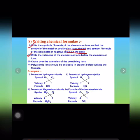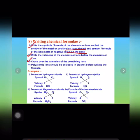The second rule is to write the valences of the elements or ions below the elements or ions. The third rule is to cross over the valences of the combining ions. So after writing the valences we have to criss-cross the valences of the ions.